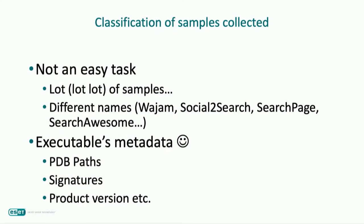Now let's move to the technical part, beginning with common observations among the different versions of WAJAM we collected and how we classified them. We collected an important number of WAJAM samples, and the first step was to classify them by versions and features. The first observation was that WAJAM is not the only name used — there are many others like Social Search, Search Page, and Search Awesome. Thanks to the metadata of the samples — mainly Windows executables — like the PDB path and product version, it was possible to classify them.